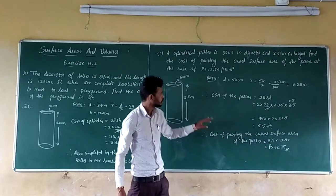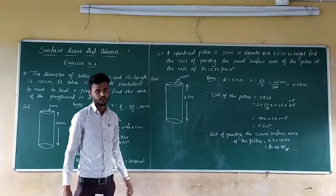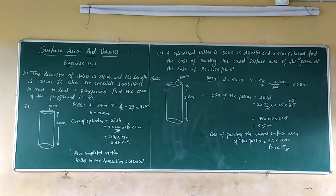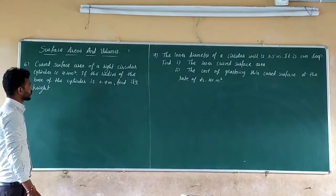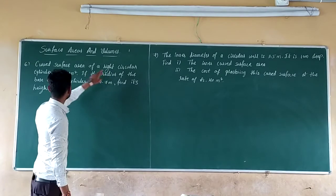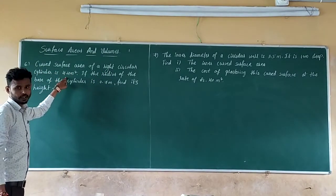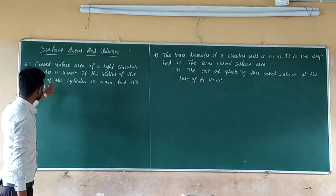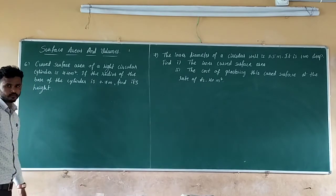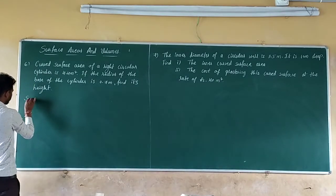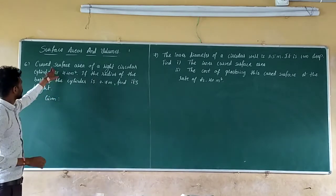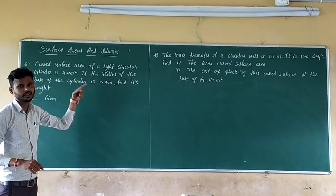This is the solution of the 5th question. Let us see the 6th question. The curved surface area of a right circular cylinder is 4.4 m². The radius of the base of the cylinder is 0.7 m. Find the height. Given: CSA equals 4.4 m² and radius equals 0.7 m.